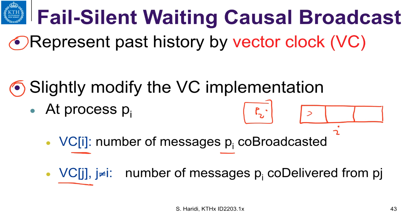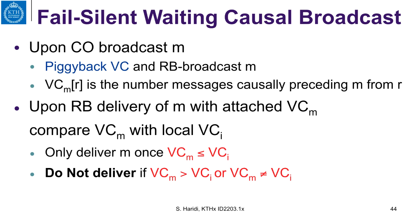For example, you are going to have the number of messages broadcast by P1 and causally delivered by Pi, in this case P2. The basic idea is that when a process causally broadcasts a message M, it piggybacks the vector clock that it has locally and does a reliable broadcast of the message M. What is sent is a pair: the vector clock and the message.